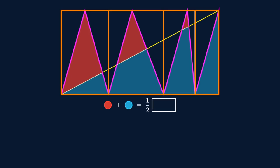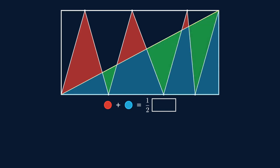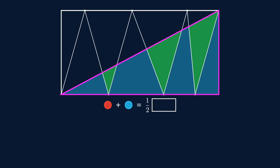So red plus blue equals half of the total rectangle. Now let's try finding the sum of the green and the blue areas. Take a look. If we combine them we form this triangle.